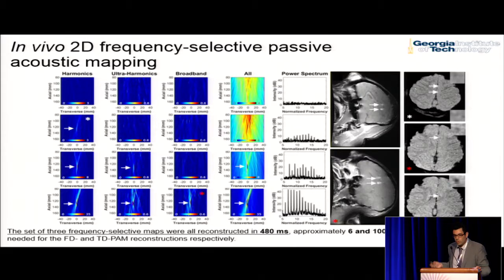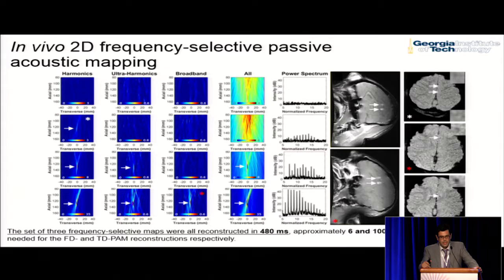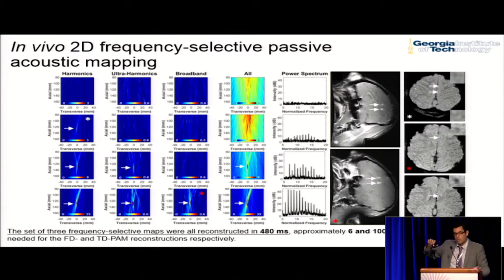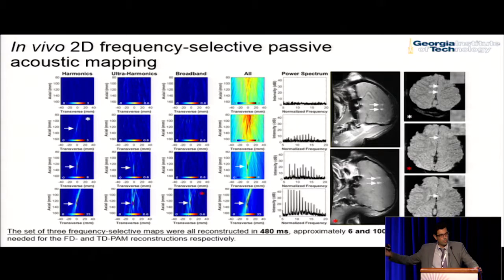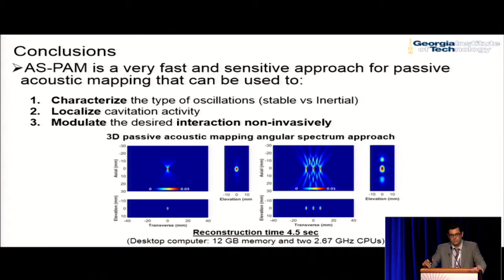Most interestingly, when we collected the MRI data, we found that when we had harmonic-only components — indicated by the white asterisk — we had successful blood-brain barrier disruption and no tissue damage. On the other hand, when we had broadband emissions from a point source, we had erythrocyte extravasation and petechiae. So this can be used to fine-tune the exposure conditions.